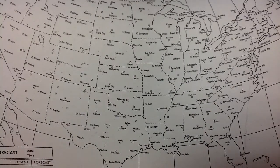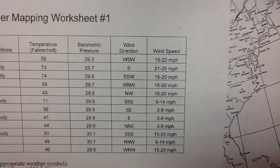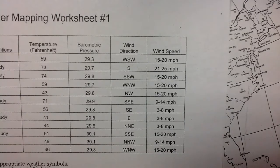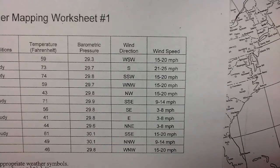The first thing, and probably the hardest thing about station models, is that you have to convert from miles per hour to knots. There are many 15 to 20 mile an hour weather readings, three 3 to 8 mile per hours, two 9 to 14 mile per hours, and one 21 through 25 mile per hours. We're going to do all that converting right off the bat using the conversion table at the bottom of our station model reference guide.